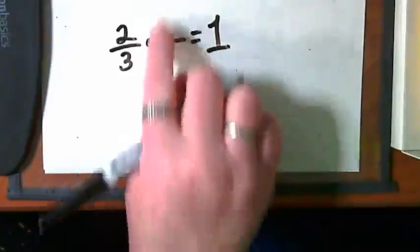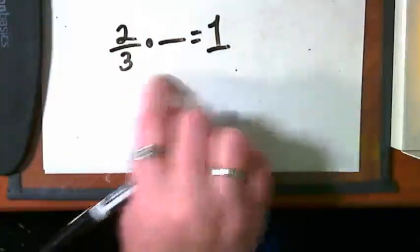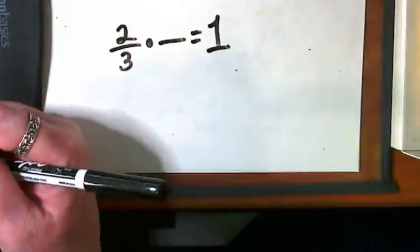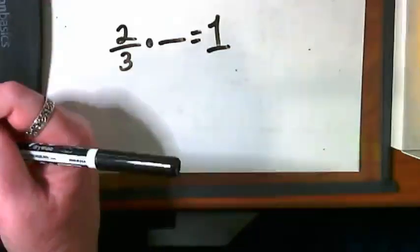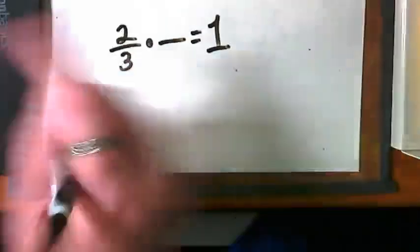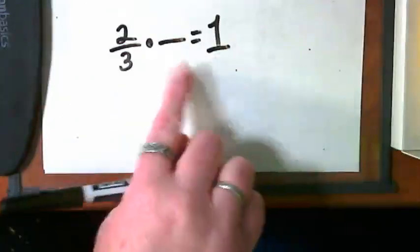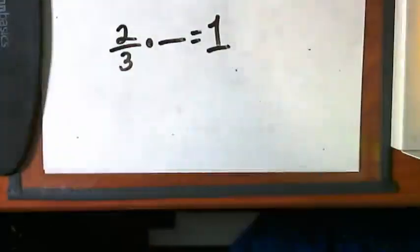How do I get something here that when I multiply two over three by it, I get to one? And at this point, I want you to come grab a pen and get to your boards and copy this down and let's see if your team can play with that idea just for a minute.